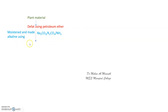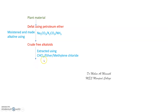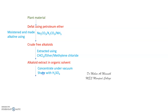By making the de-fatted plant material alkaline — when you treat it with this base — you get a crude mixture of free alkaloids, not in pure form. This is then extracted using an organic solvent such as chloroform, ether, or methylene chloride; the alkaloids go into the organic solvent.